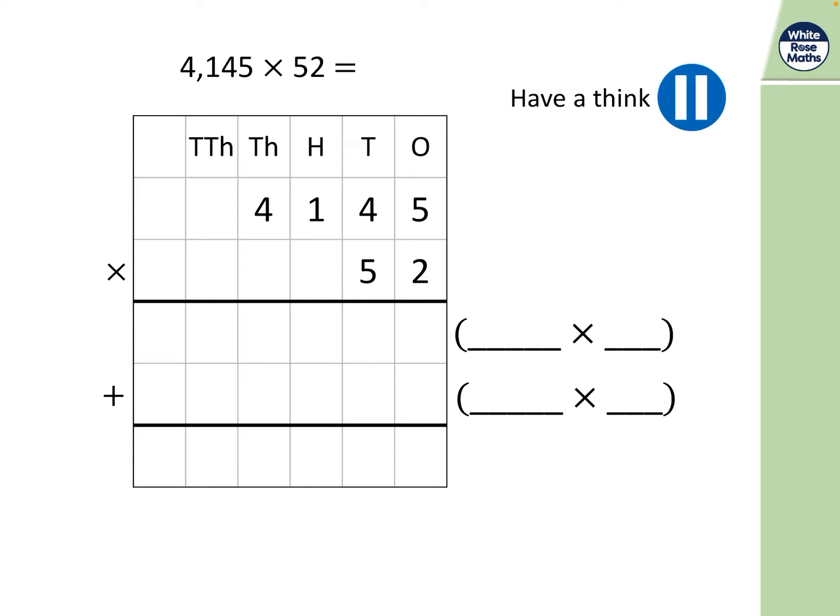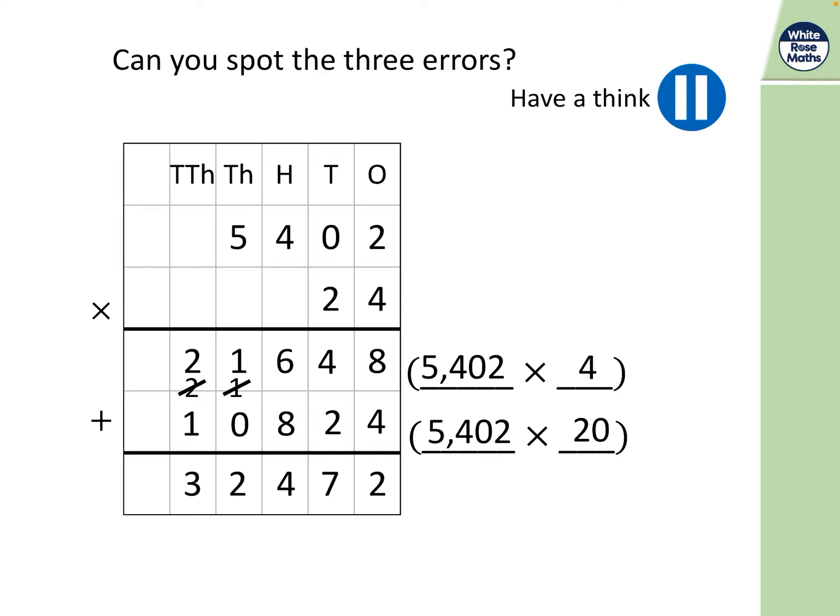So have a go with this 5,414 times 52. Pause the video, work it out. Okay, well done if you saw it was 50 and 2. So 2 times 5, 2 times 4, 2 times 1, 2 times 4. Got that well done. I'm just going to go for it really quick so remember put our zero in first. 5 times 5 is 25. 5 times 4 is 20, add the 2 is 22. Put the 2 down. And we should have something that looks like this: 281,528. Well done if you got that.